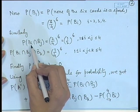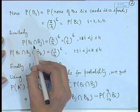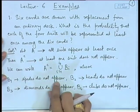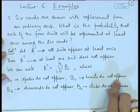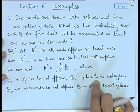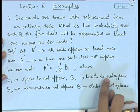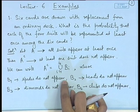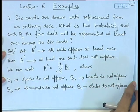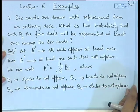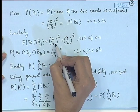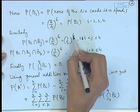For P(B_1 ∩ B_2): spade and heart do not appear. In a deck of 52 cards, 26 are spades or hearts, so in a single draw the probability of neither is 1/2. In 6 independent draws with replacement, the probability becomes (1/2)^6.